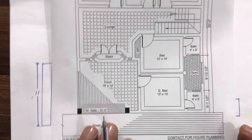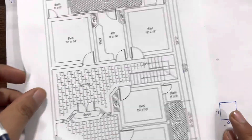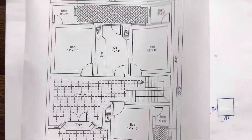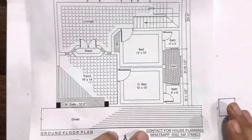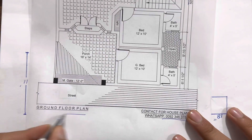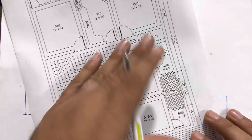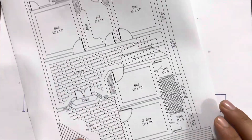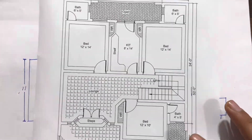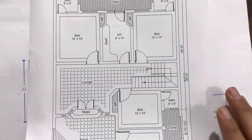Here you can see the width is 35 feet and the length is 50 feet. The house front is located at the north direction. As you can see, this is the ground floor plan; on the top of the sheet we have the first floor plan. We have a back side open to sky.